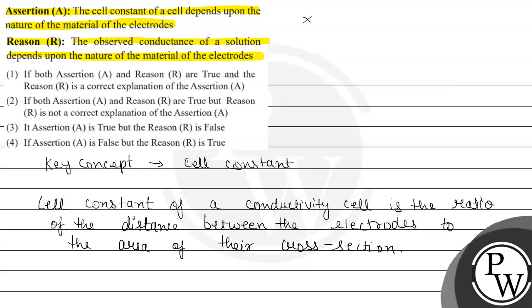So it depends on the nature of material and it is actually directly proportional to the nature of material of the electrodes. So the reason is the correct one. By this we can say the final answer will be option four, which says if Assertion A is false but the Reason R is true. So let us mark option fourth as the final answer of this question. Options first, second and third are incorrect. Hope you understood it well. Best of luck.